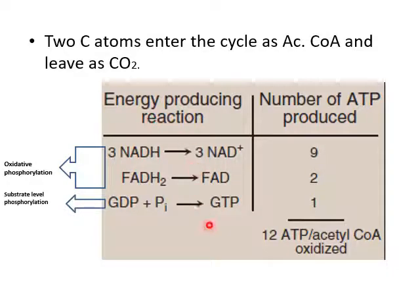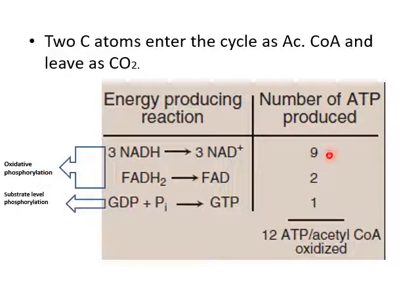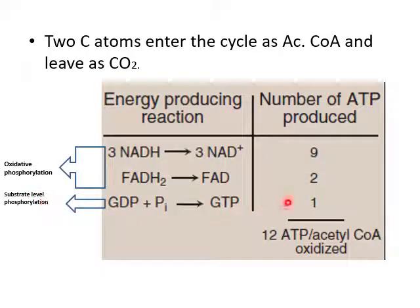This slide shows the energetics of Krebs cycle. In one run, we get three NADH, one FADH₂, and one GTP. These undergo oxidative phosphorylation in the electron transport chain. Three NADH yield nine ATPs (one NADH gives three ATPs); one FADH₂ yields two ATPs; one GTP yields one ATP via substrate-level phosphorylation. In total, 12 ATPs are produced when one molecule of acetyl-CoA is completely oxidized in one run of Krebs cycle.